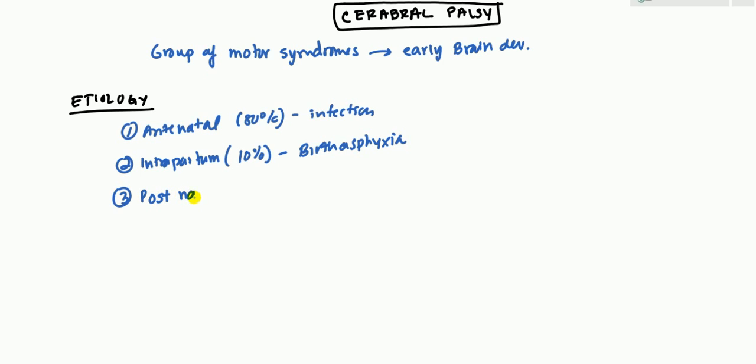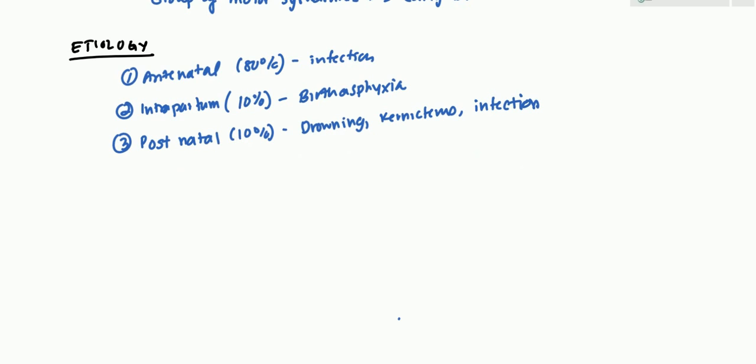And finally we have postnatal. And these are going to be again another 10%. This can be caused due to an almost drowning situation, kernicterus which is caused by increased bilirubin levels, and finally infections. Postnatal infections which are particularly severe can then lead to cerebral palsy.